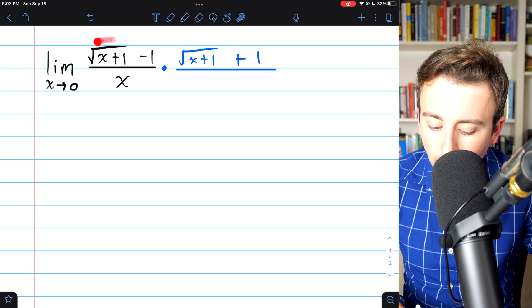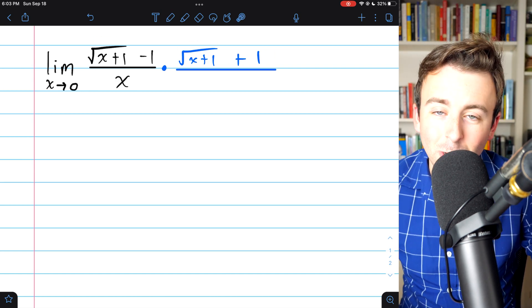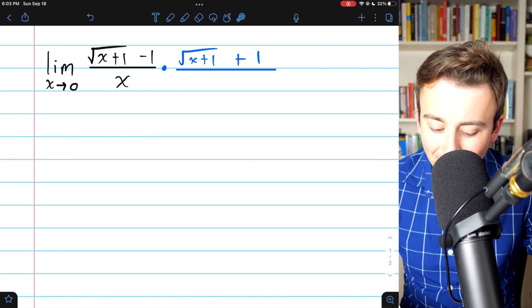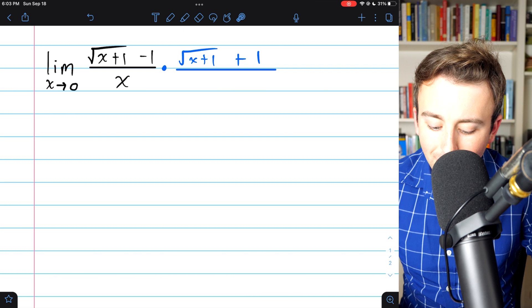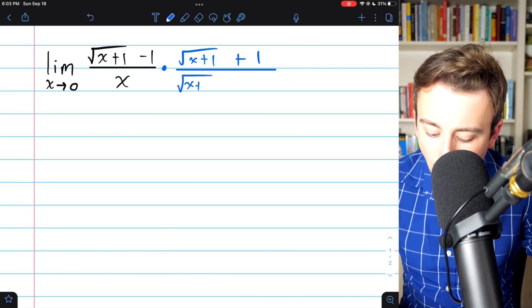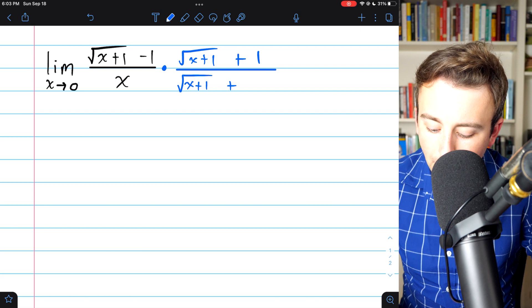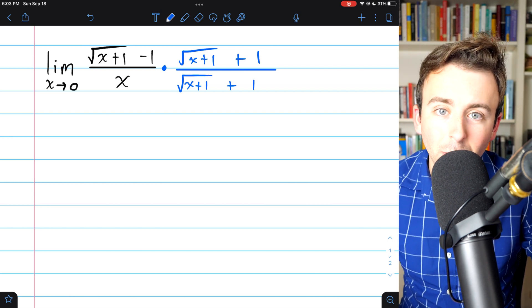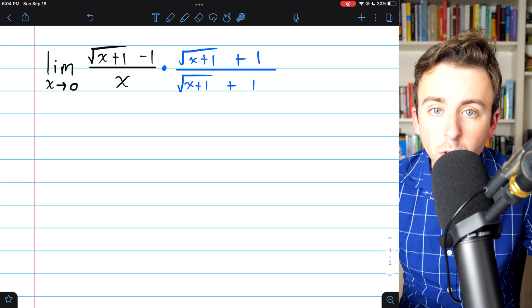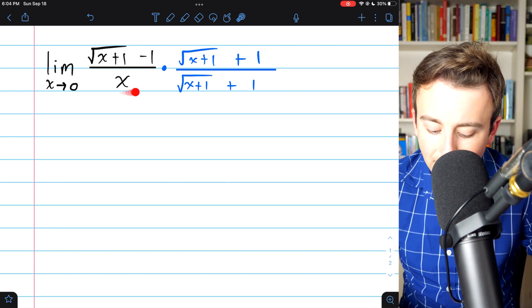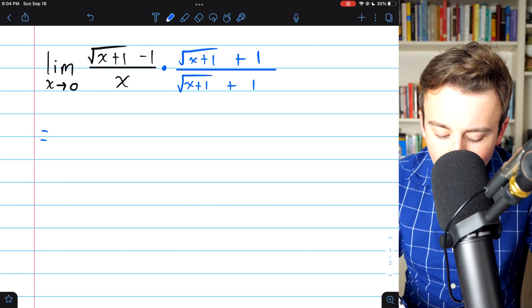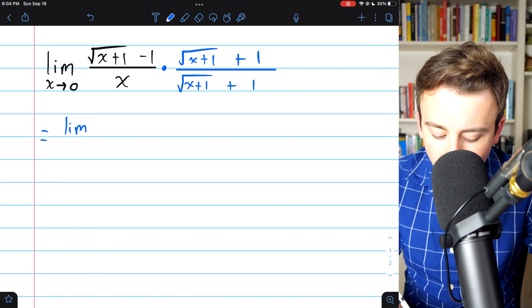Now, this may remind you of a difference of squares factorization. That's really why this works. What we're going to end up getting is the square of this thing minus the square of this thing. Now, of course, we have to multiply by the same thing in the denominator. That way, we're just multiplying by 1 and not changing the value of our limit. So originally, we couldn't evaluate this limit by substitution, since that would give us a division by 0. But after we carry out all this multiplication, believe it or not, it's all going to work out.